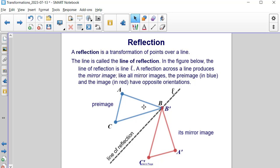A reflection across a line produces a mirror-like image. So, just like mirror images, the pre-image in blue and the image in red have opposite orientations.